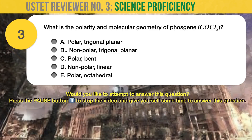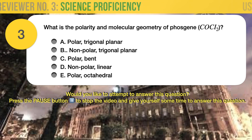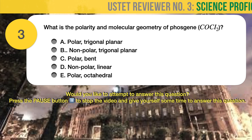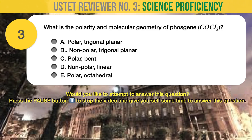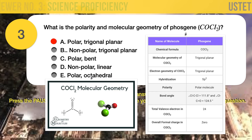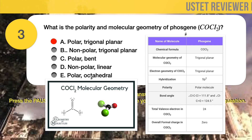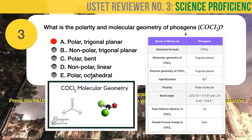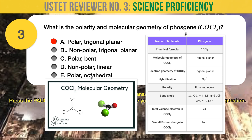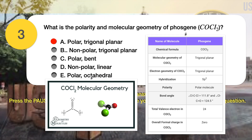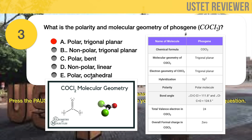Question number 3. Chemistry. What is the polarity in molecular geometry of phosgene? The correct answer is A: polar trigonal planar. The Lewis structure of phosgene consists of three different elemental atoms. The carbon atom is present at the center of the molecule, bonded to an oxygen atom at the center and two atoms of chlorine, one on each side. There are a total of three electron density regions around the central carbon atom, all constituted of bond pairs, meaning there is no lone pair on the central carbon atom in phosgene.